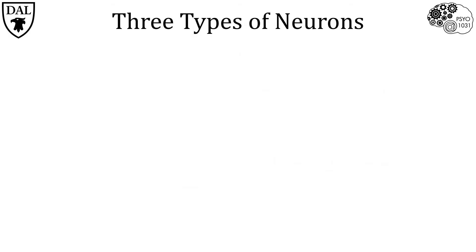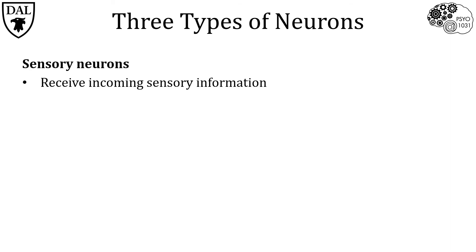If we classify neurons based on their synaptic connections, it yields three different types. Sensory neurons receive their input from various stimuli in the environment. They tend to have very specialized shapes in order to capture sounds, sights, smells, and other types of information we get from our sensory world.